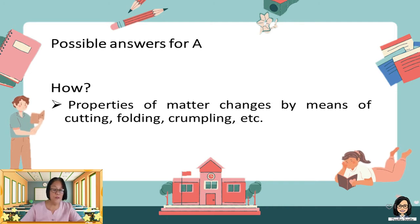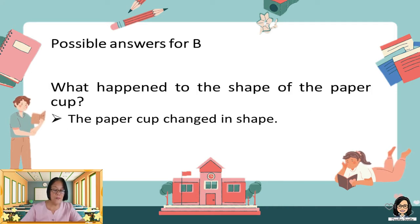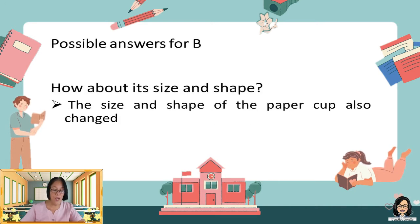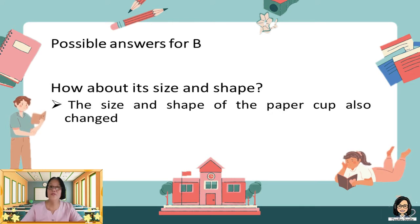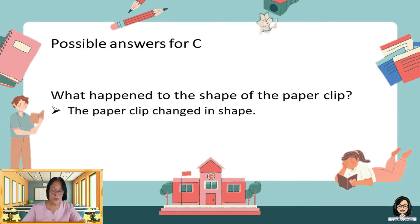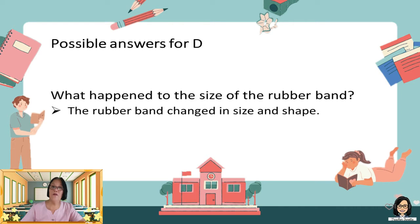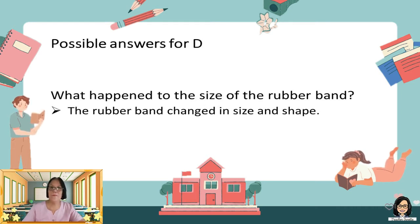For letter B: What happened to the shape of the paper cap? The paper cap changes its shape. How about its size and shape? The size and shape of it also changes. What happened to the shape of the paper clip? The paper clip changes its shape. What happened to the size of the rubber band? The rubber band changes its size and shape.